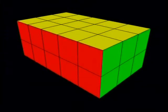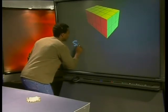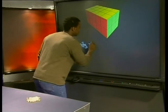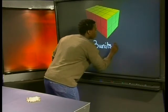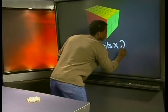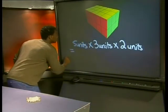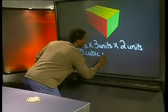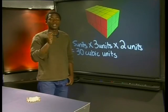What about this one? What's its volume? That's 5 units multiplied by 3 units multiplied by 2 units. So its volume is 30 cubic units.